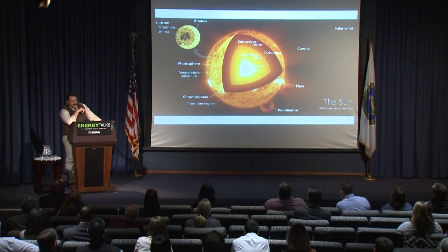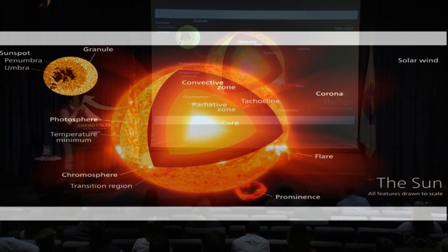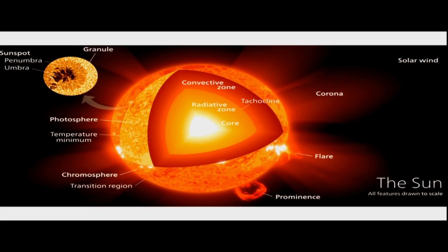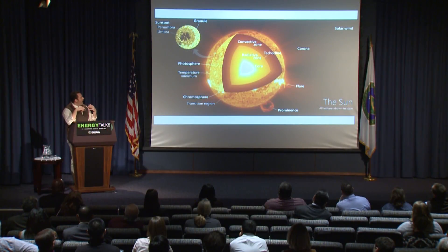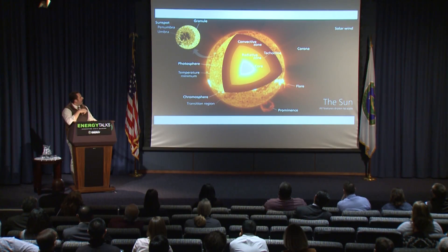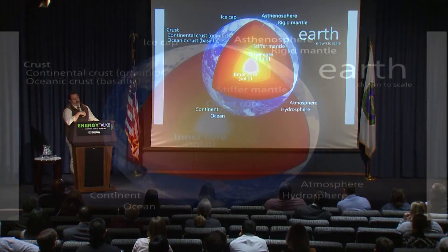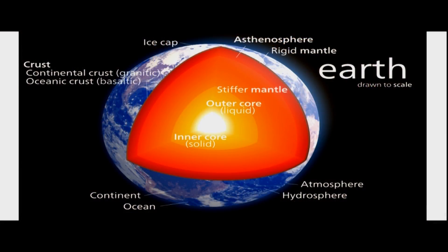Let's begin where every oil and gas talk should begin — at the sun. Our solar system formed many billions of years ago. The sun is undertaking hydrogen fusion, converting hydrogen into helium, and in doing so emitting electromagnetic radiation energy. 93 million miles later, we arrive at this little gem — Earth.